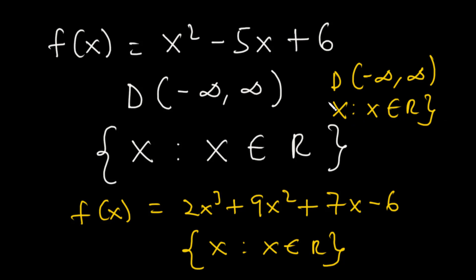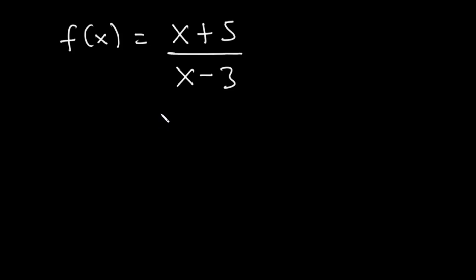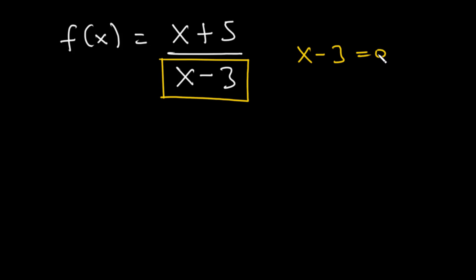Now how do we find the domain of a rational function? Say we have f of x is equal to x plus 5 divided by x minus 3. What value of x will make the denominator go to zero? To find that value, we equate x minus 3 to zero: x minus 3 equals zero, then transposing negative 3 to the right-hand side gives x is equal to 3.